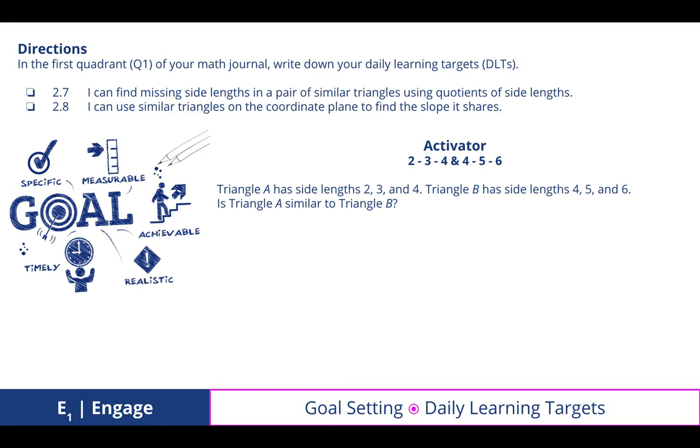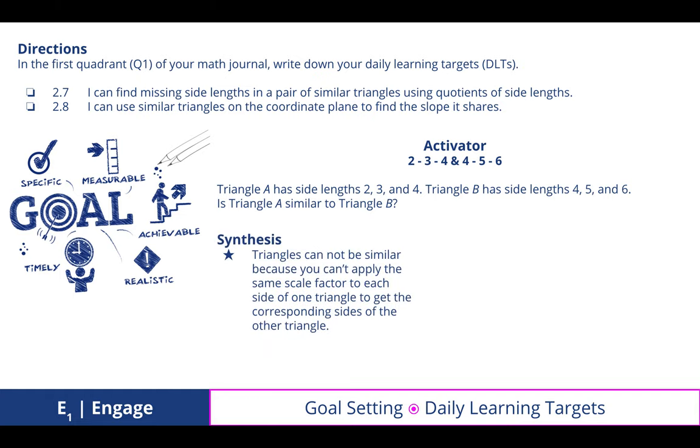3 to 5 means we're multiplying by 5 divided by 3, which is 1 and 2 fifths. So they are not the same, which means these triangles are not similar. Triangles cannot be similar because you can't apply the same scale factor to each side of one triangle to get the corresponding sides of the other triangles.